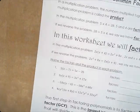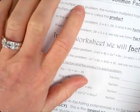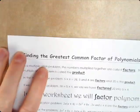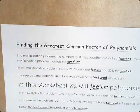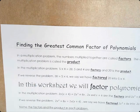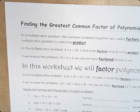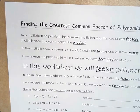So that is what factoring is. We are going to factor out the greatest common factor of a polynomial. We are going to undo distribution, and that is by factoring.